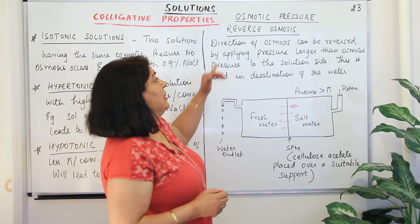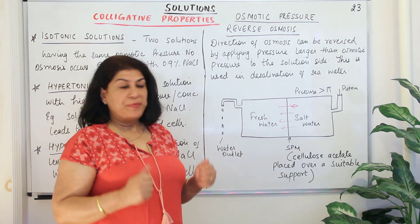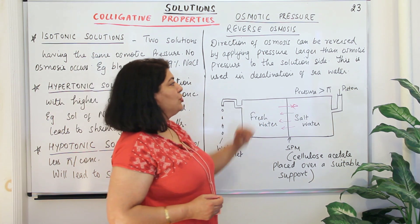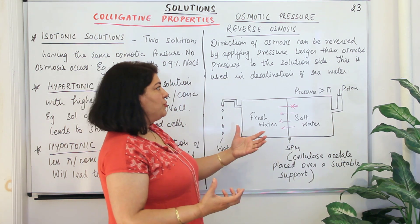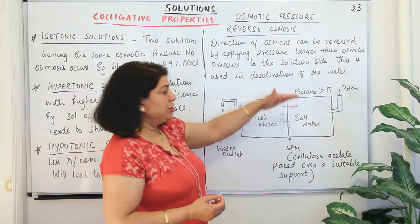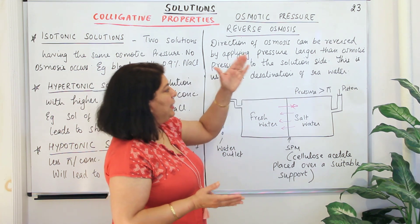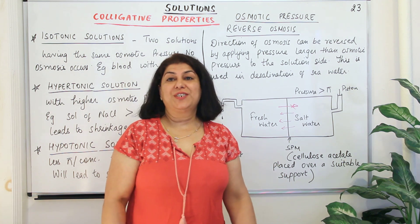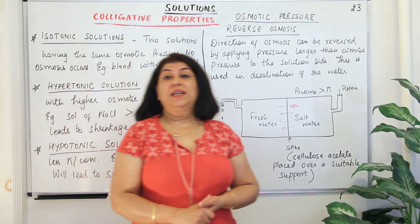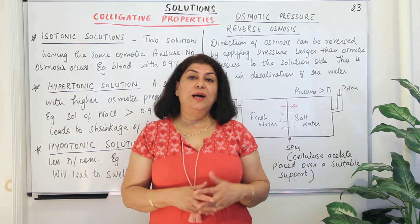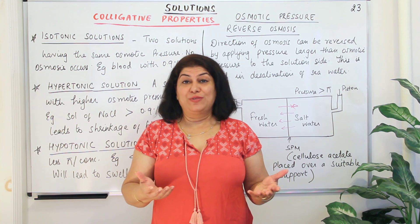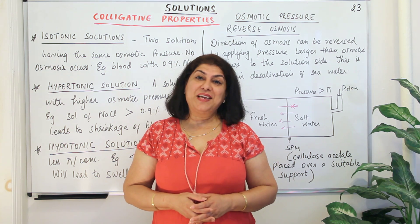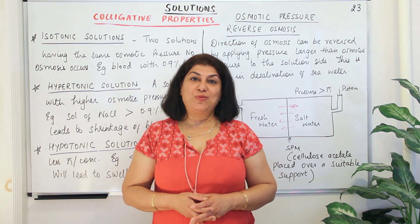To summarize: the direction of osmosis can be reversed by applying pressure larger than the osmotic pressure to the solution side. Normally the solvent moves into the solution, but applying pressure equal to osmotic pressure stops osmosis, and applying pressure greater than osmotic pressure initiates reverse osmosis. This is used in the desalination of sea water. In the next video, I'll do a couple of problems based on osmotic pressure. If you found this video helpful, give it a thumbs up, subscribe to my channel, recommend it to your friends, and keep returning for more videos on chemistry. Thank you for watching, bye-bye for now.